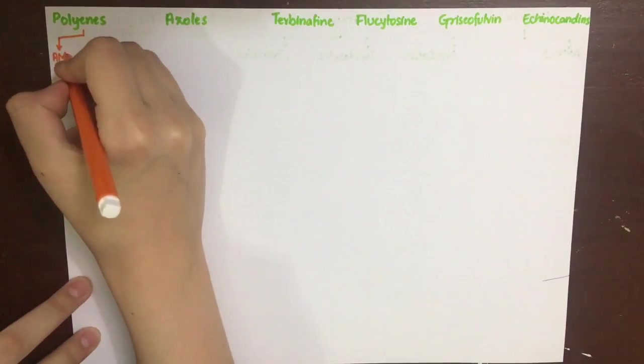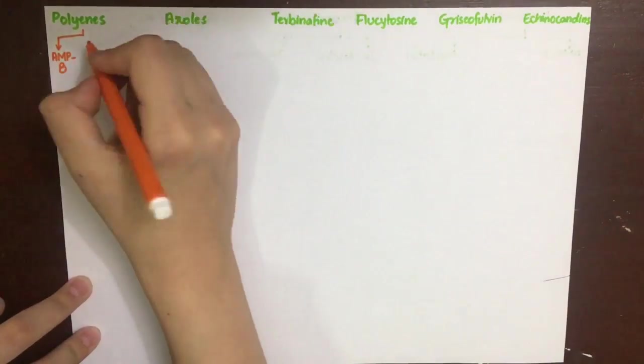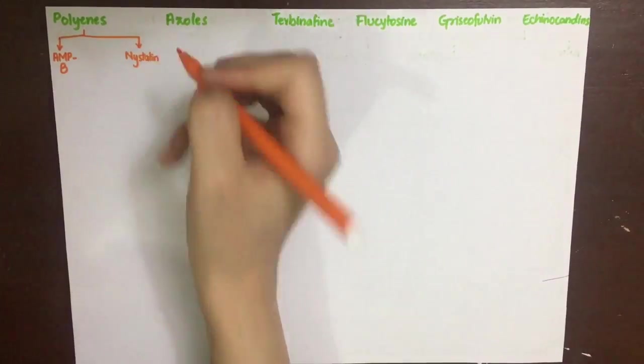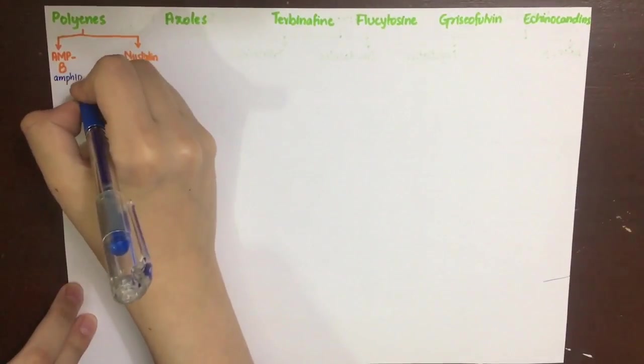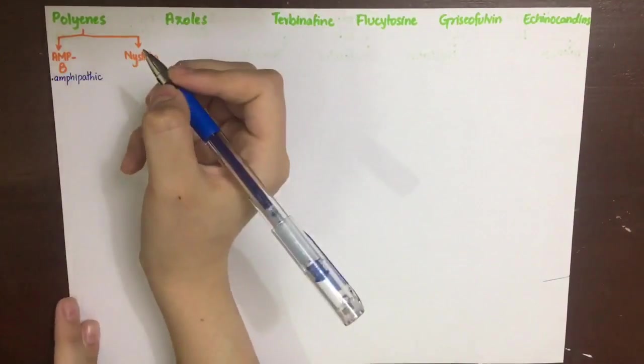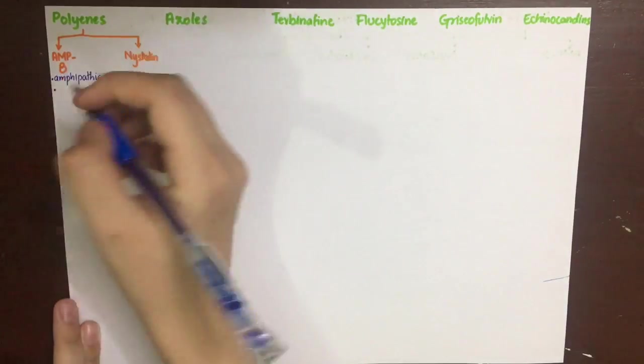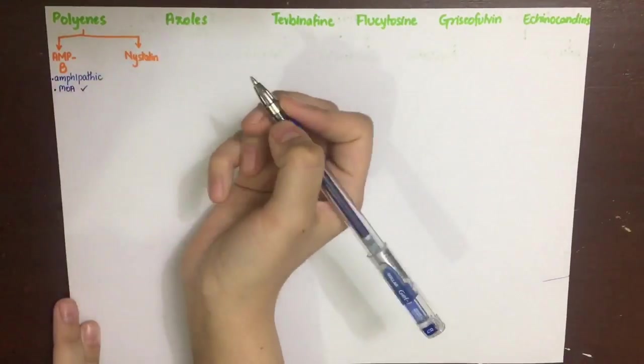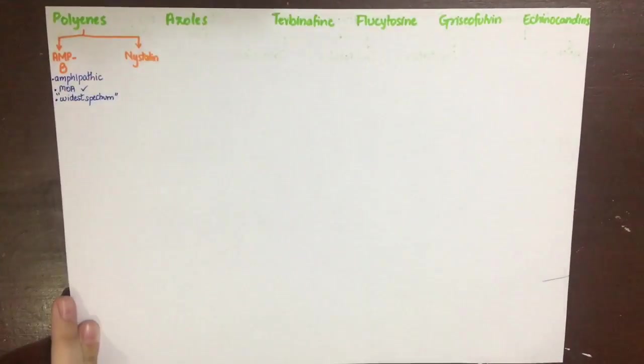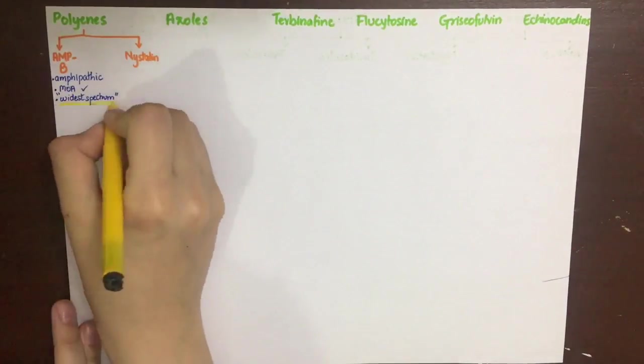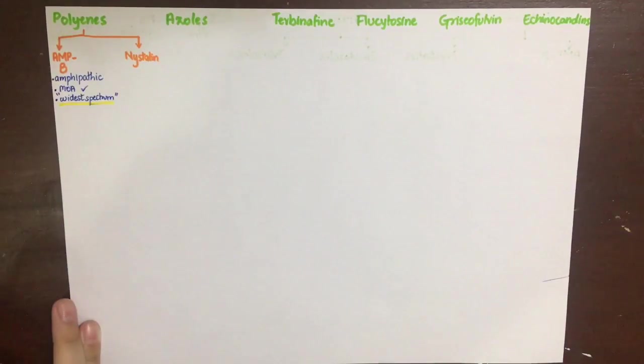The polyenes include amphotericin B and nystatin. Amphotericin B is an amphipathic molecule with both lipophilic and hydrophilic parts. It interacts with ergosterol in the cell membrane of fungus and forms pores. It has the widest spectrum of activity of all antifungal drugs and is very good in systemic fungal infections.